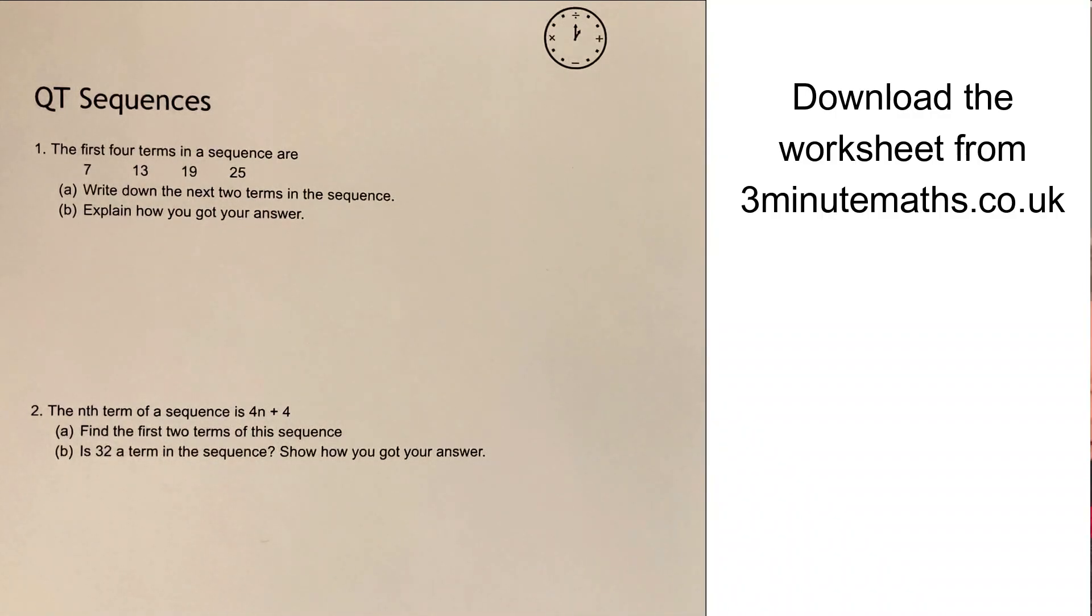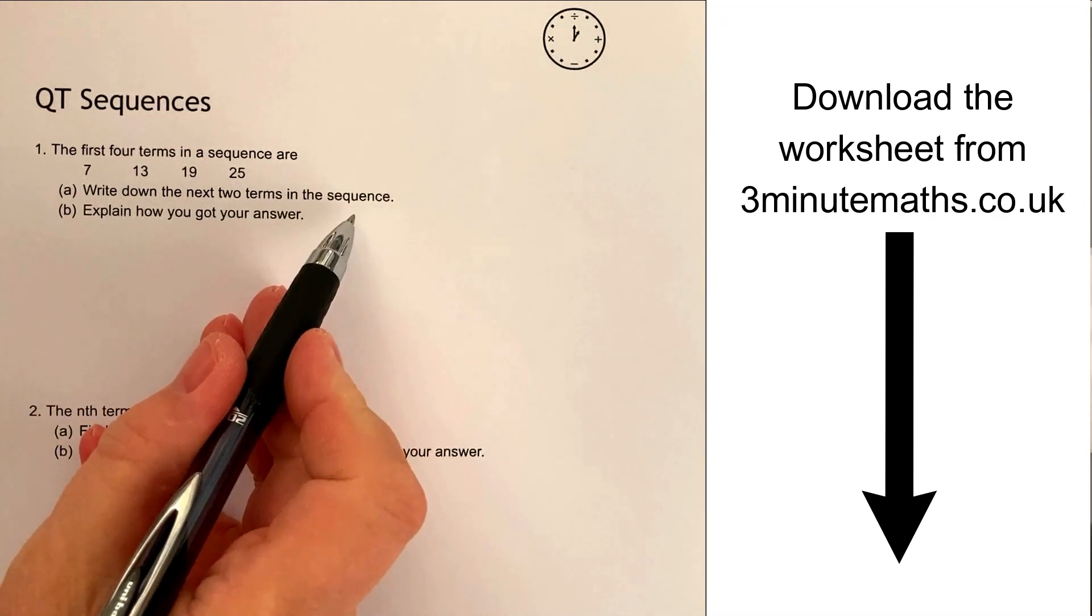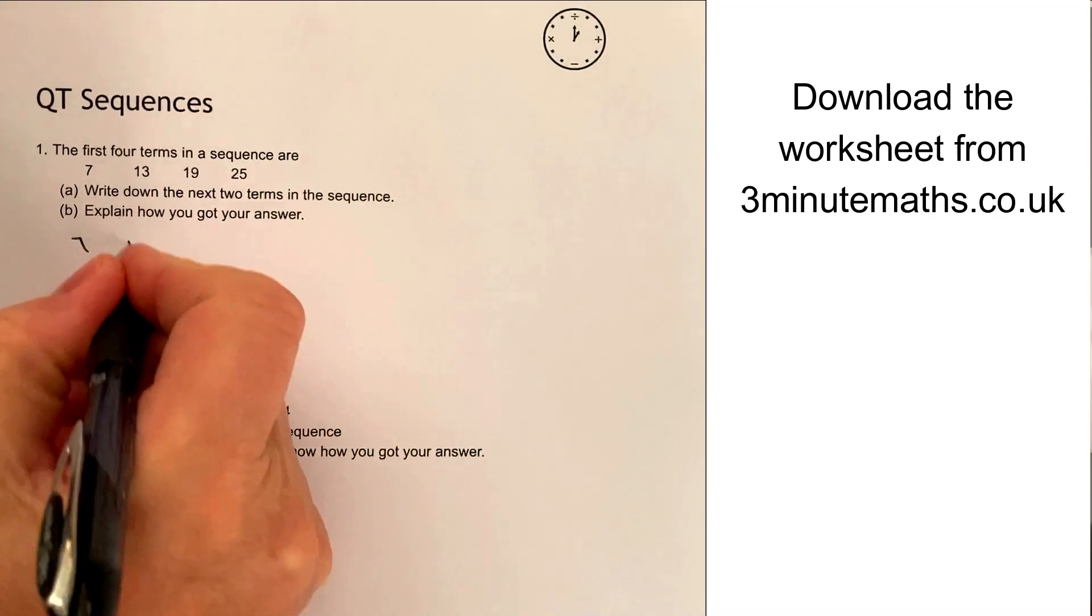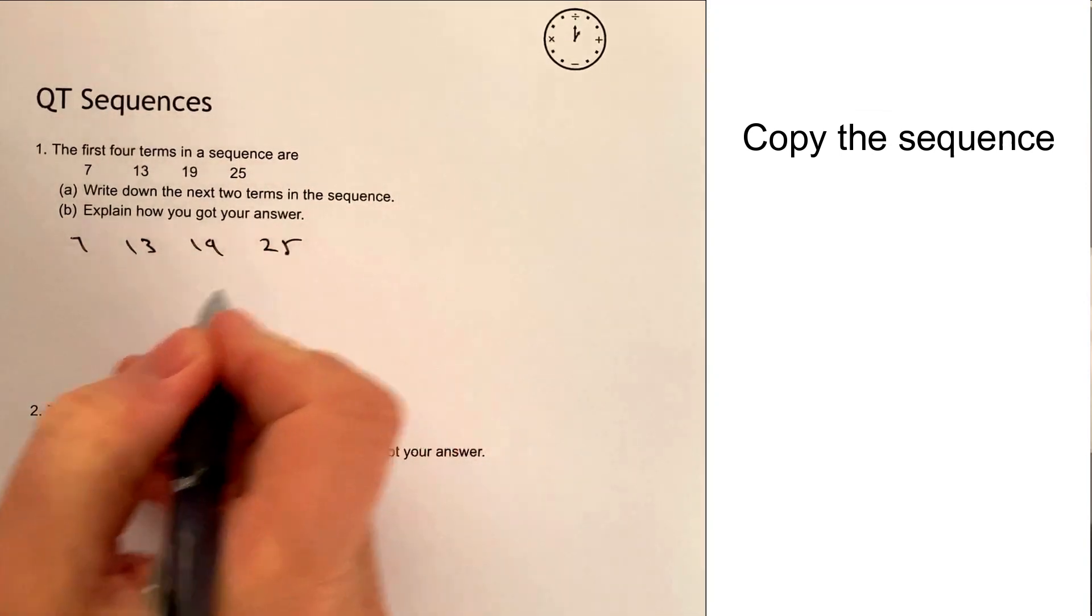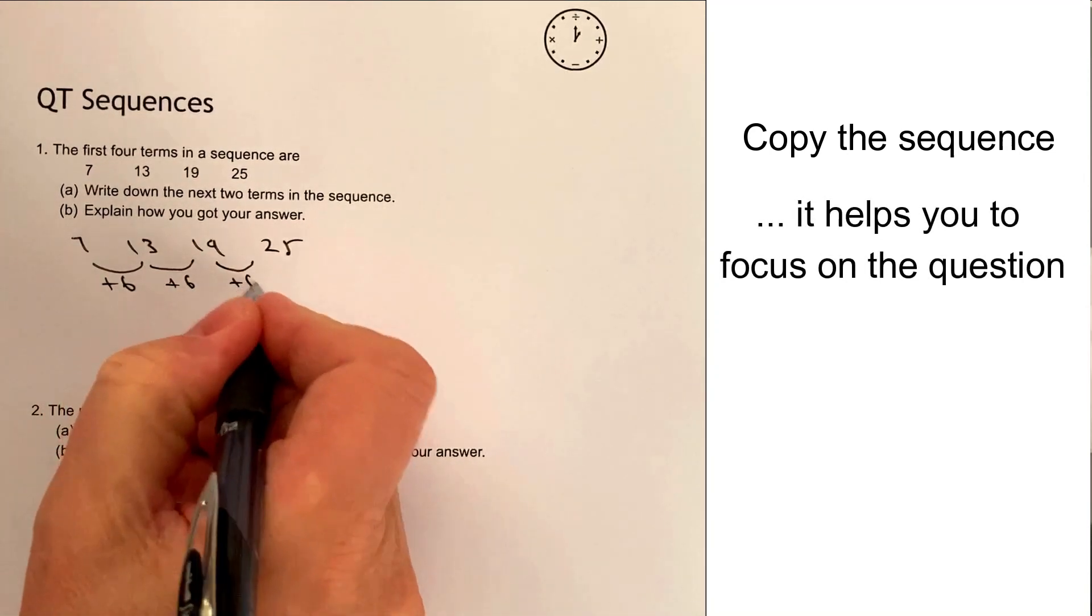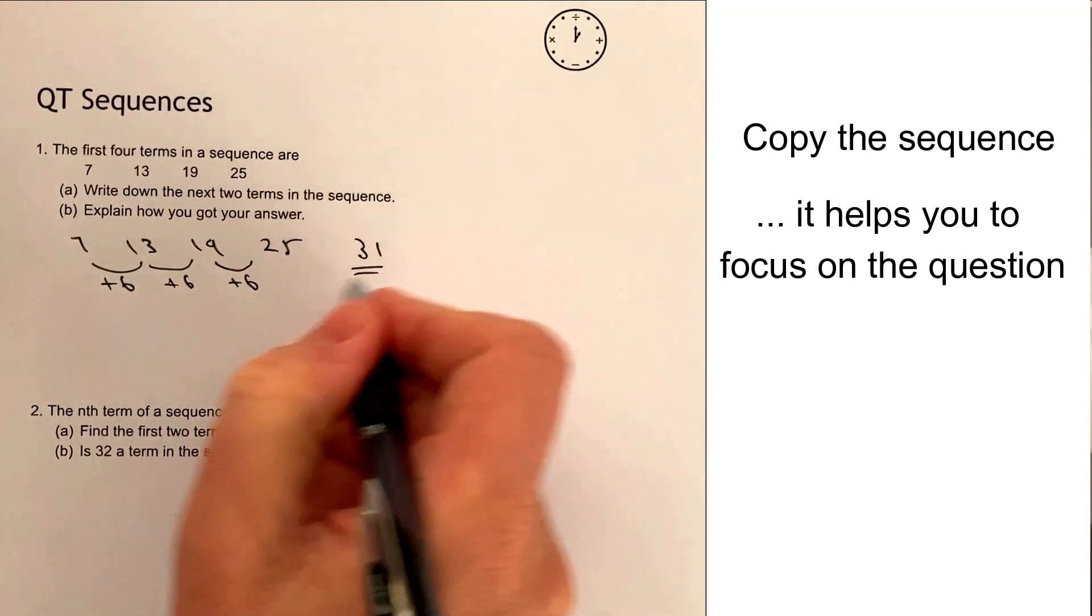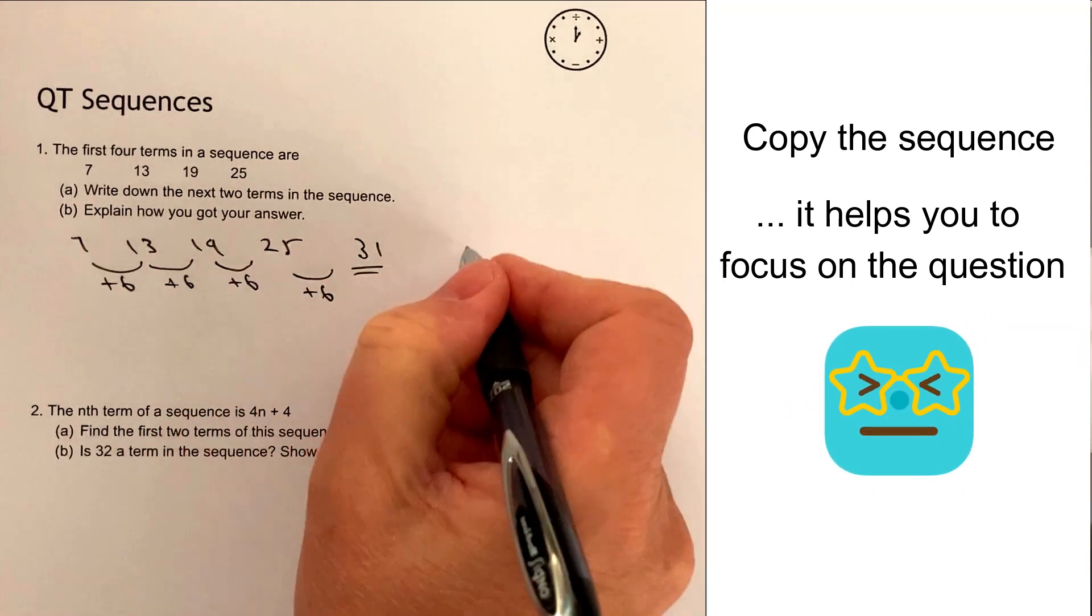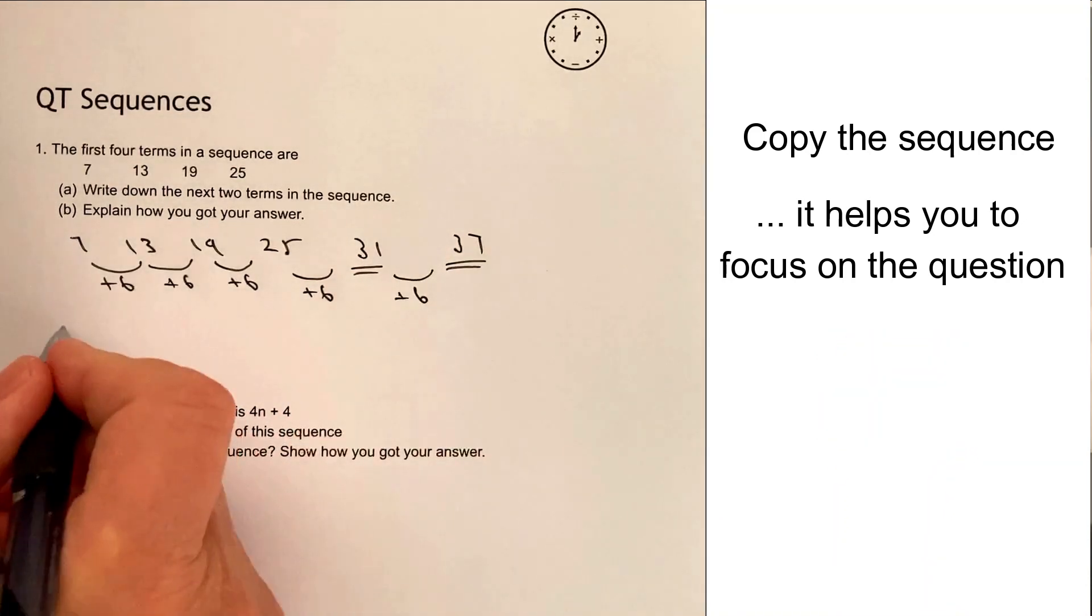The first question is fairly straightforward, aimed at roughly grade 4 level. It says write down the next two terms in the sequence. We've got 7, 13, 19, 25, and hopefully you can see that we are adding 6 each time. So the next two terms in the sequence are going to be 31, which is plus 6, and also 37, which is also plus 6. Those are the next two terms.